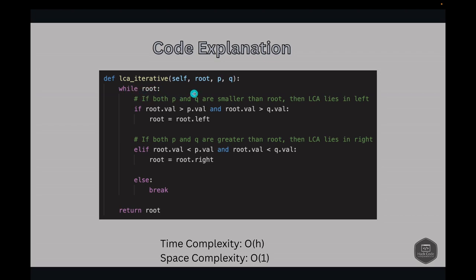In the iterative code: we loop while root is not None. The first case checks if both P and Q are smaller than root — if root.val is greater than p.val and root.val is greater than q.val, the LCA lies in the left subtree, so we set root = root.left. The second case checks if root.val is less than p.val and root.val is less than q.val — if both P and Q are greater than root, the LCA lies in the right subtree, so we set root = root.right. Otherwise, we break out of the loop because root is the LCA — the case where one node is on the left and one is on the right.